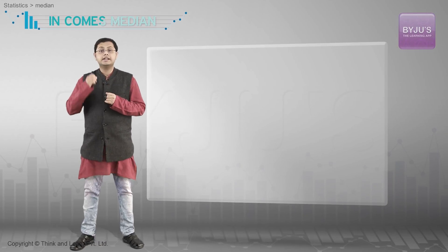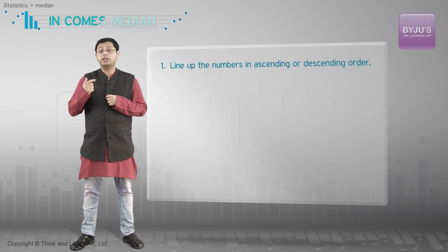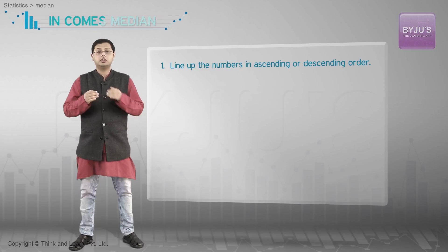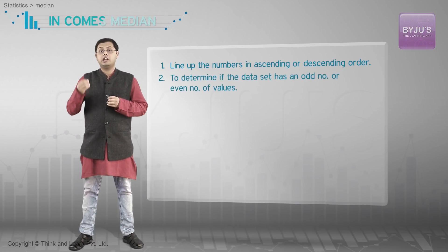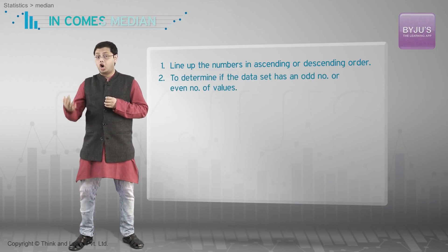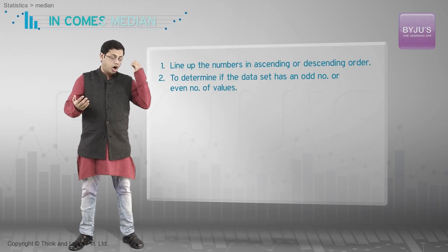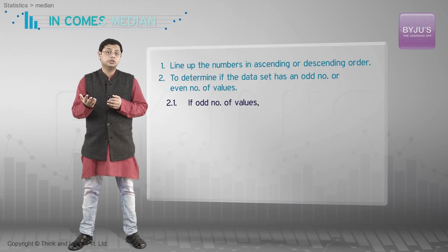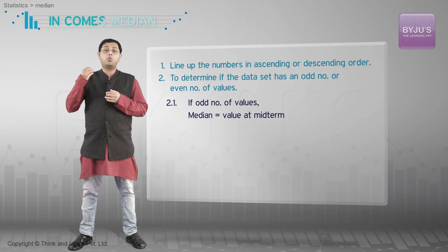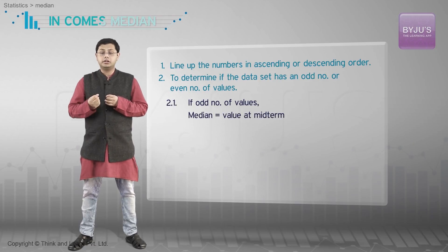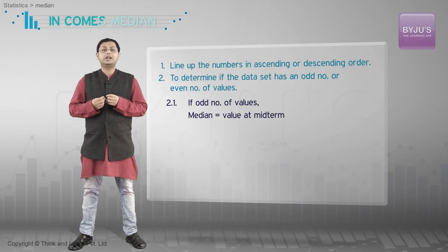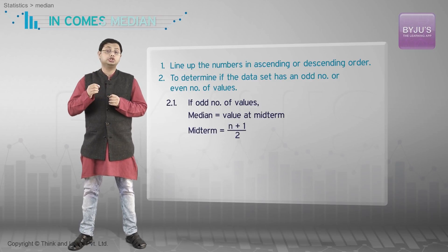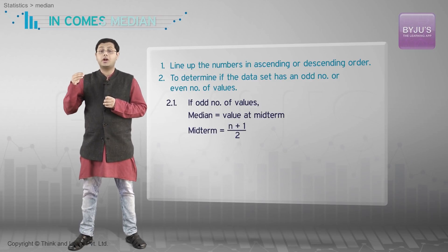To summarize: step one is to line up the numbers in either ascending or descending order. Step two is to determine if your data set has an odd or even number of values. If you have an odd number of values, the median is the one in the middle — in a set with n values, the middle number is at position (n + 1) / 2.